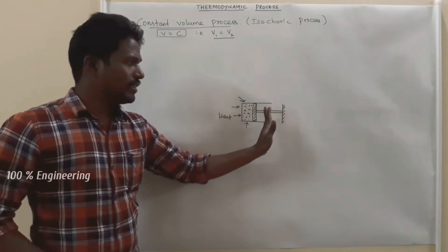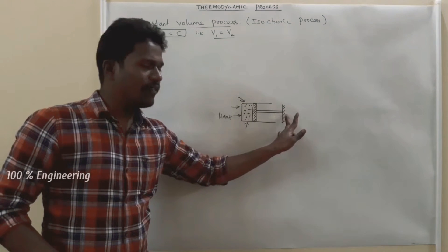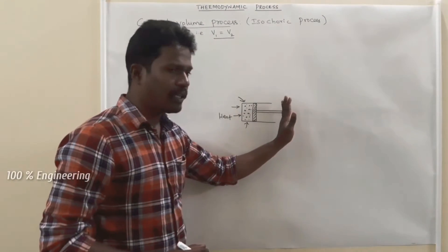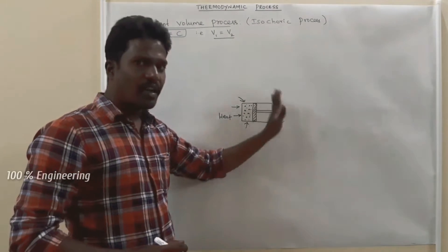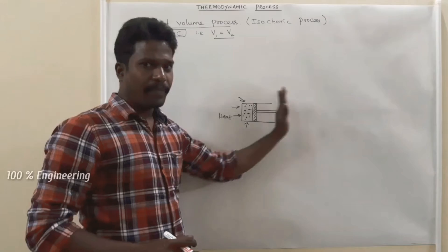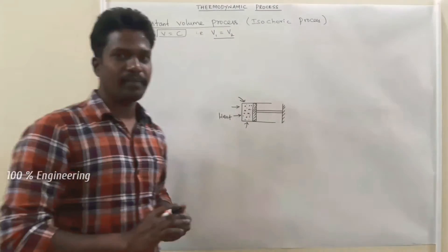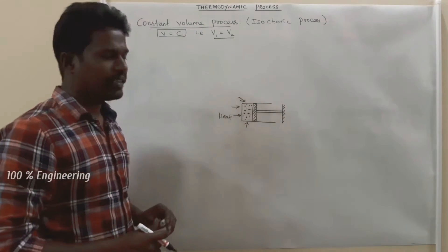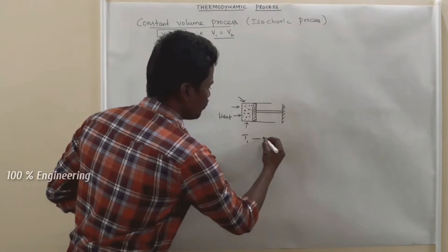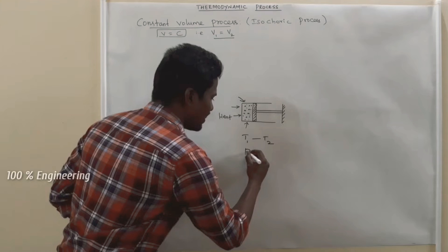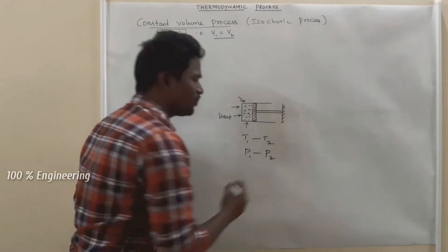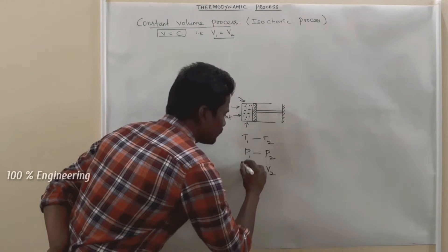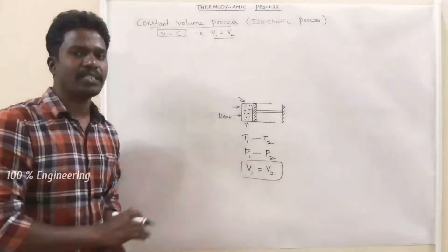Let us say this end of the piston is rigidly fixed to some support, so it is immovable. Heat is supplied to the gas. The temperature rises from T1 to T2 and the pressure rises from P1 to P2, but the volume V1 will be equal to V2. There will not be any change in volume.